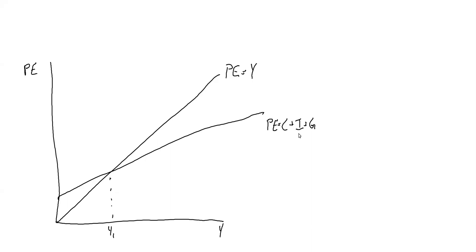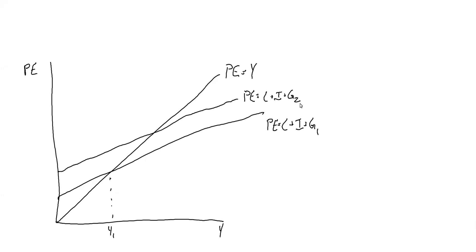Higher government spending in this model is going to look like a higher level of planned expenditure — it's going to shift that entire curve upwards. So if we were initially at PE1 with C plus I plus G1, we're now going to move to a higher level of government spending with C plus I plus G2. That shifts the entire curve upwards by the amount of increase in government spending, increasing total planned expenditure for the economy.